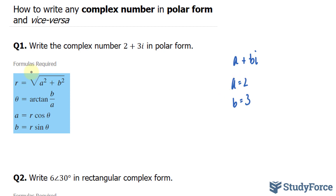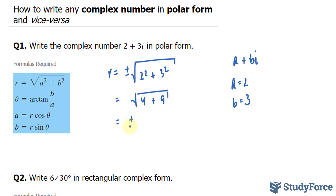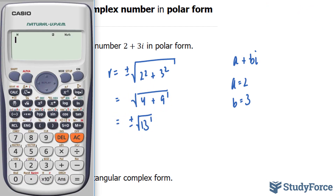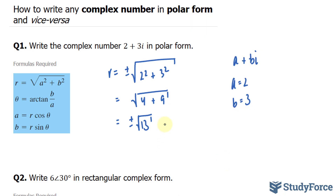To go from a and b to r, I'll use the first formula. So let's find our radius. r is equal to plus or minus the square root of 2 squared plus 3 squared. 2 squared is 4, 3 squared is 9, giving us plus or minus the square root of 13. The square root of 13 is roughly 3.6, so r equals plus or minus 3.6.